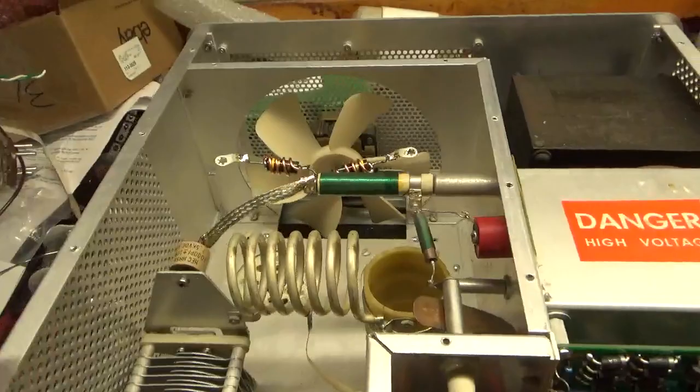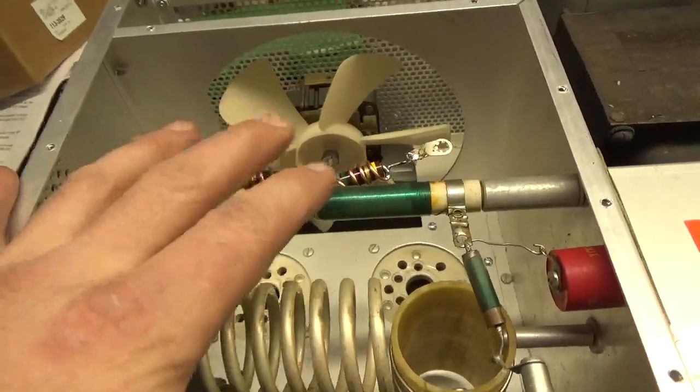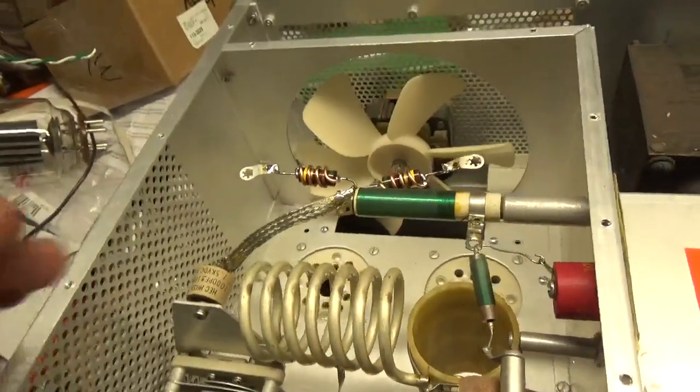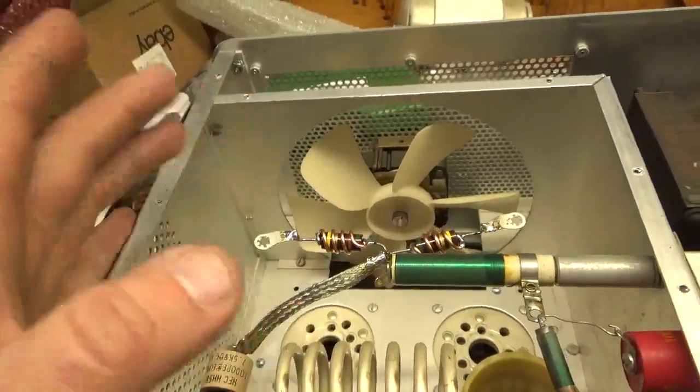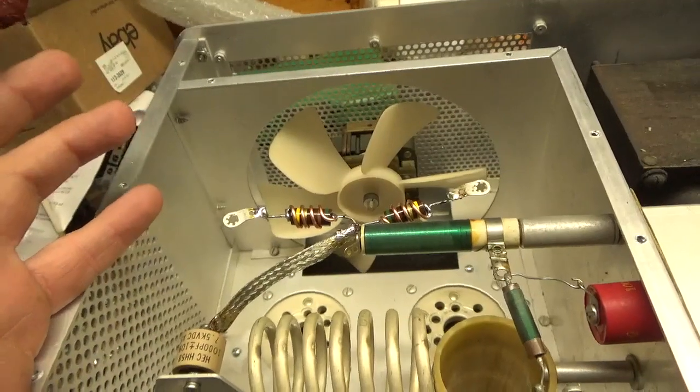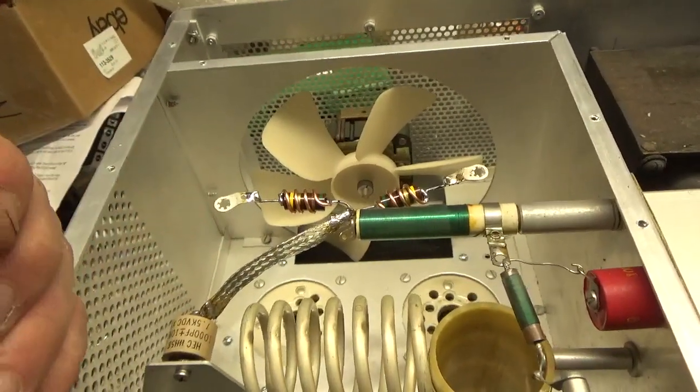I changed the parasitic suppressors. I always do that because the stock ones always shift value. These are 51 ohm, which is fine. They test at like 50 point something each. Just purchased like 300 something of them, so I should have a really good stock for a long time.